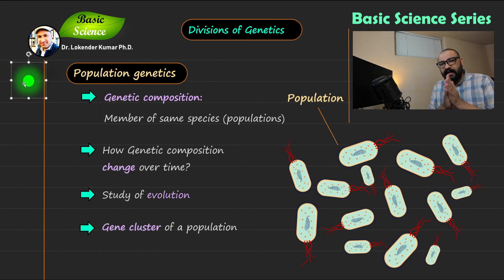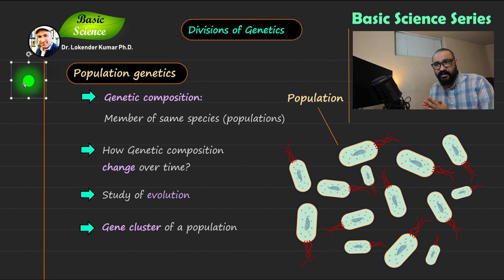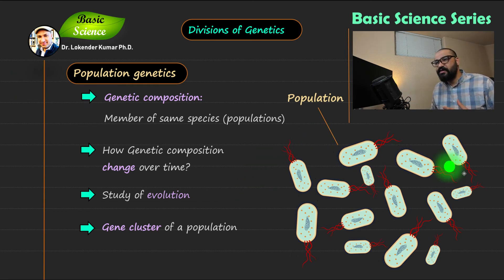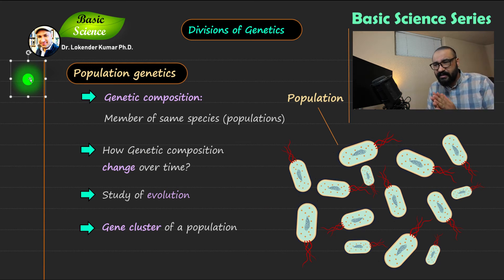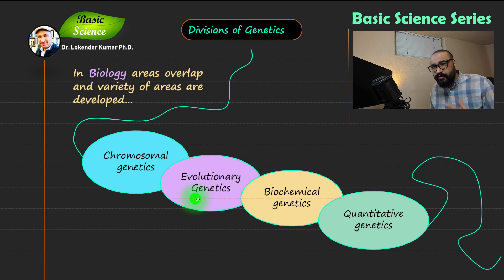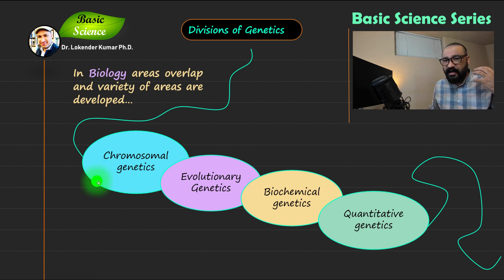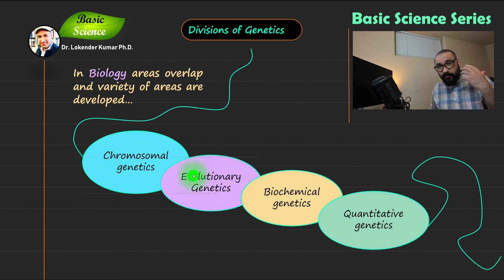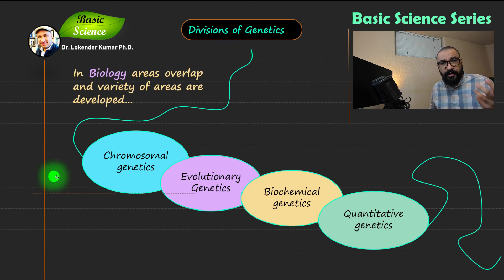So I hope that now you have a basic idea of what is transmission genetics, what is molecular genetics, and what is population genetics. I have tried to explain using examples and illustrations in this particular slide. One thing is important to understand: genetics has many divisions. As you can see, there is chromosomal genetics, evolutionary genetics, biochemical genetics, and quantitative genetics — these are different from the basic three divisions we discussed. Some are more focused on chromosomes, some on genetics of evolution, and quantitative genetics is focused more on numbers.